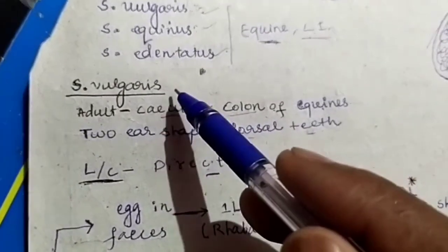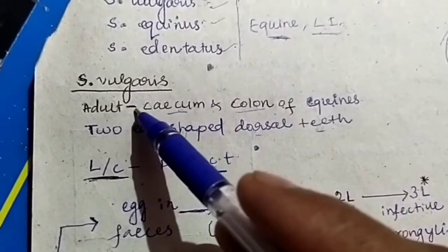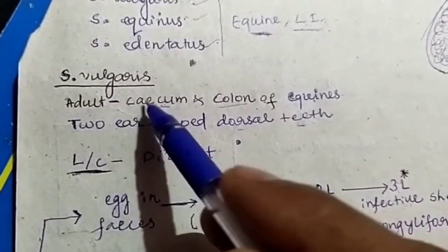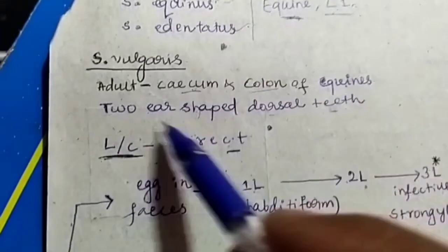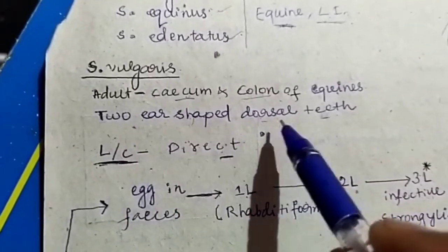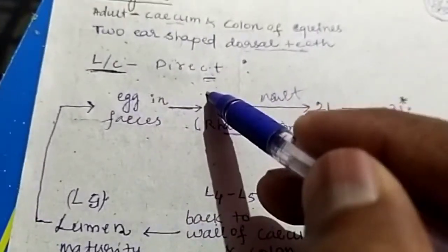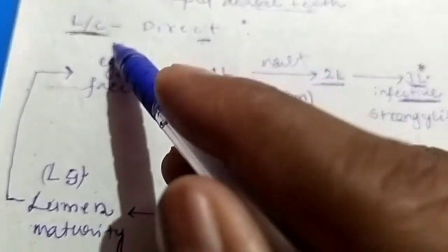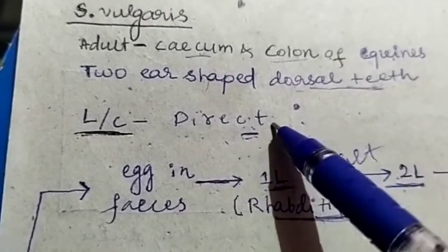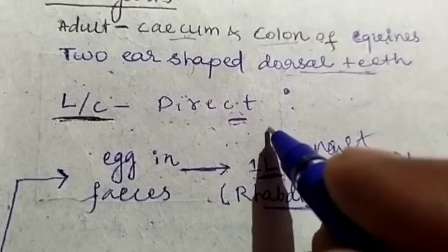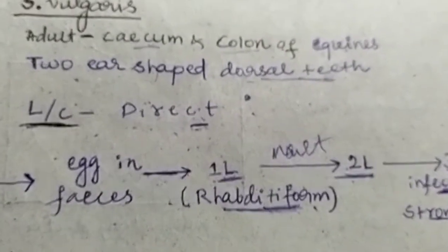Now let us come to Strongylus vulgaris. The adult worms are present in the cecum and colon of the equine and bear two ear-shaped dorsal teeth. The life cycle is direct, which means there is no involvement of intermediate host.